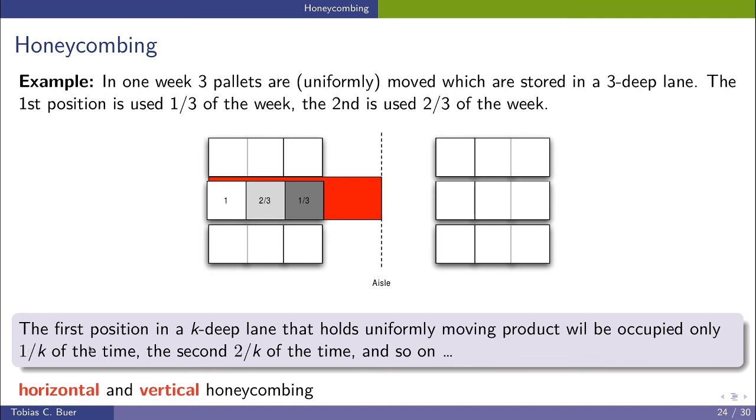So that means if the lane is K units deep then the third position is only occupied for one Kth of the time, the second for two over K, and the third for three over K, and so on and so on.